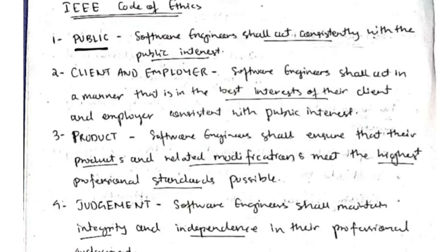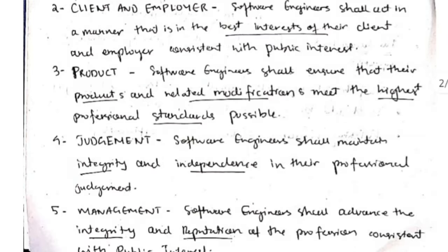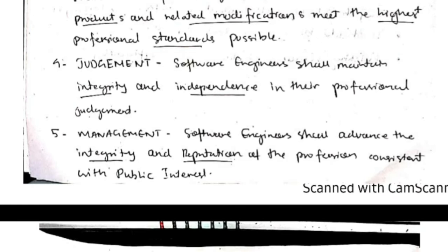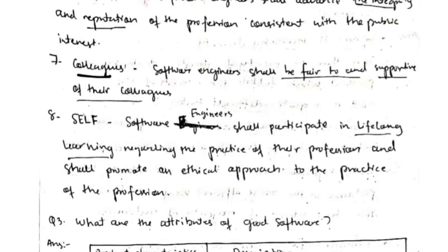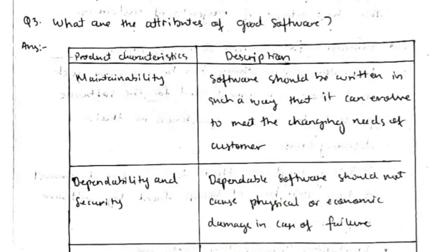For eight marks, include the IEEE code of ethics. First, public — whatever product you develop should be useful to the public. Second, there should be no conflicts between the client and employer. Third, the product should be the best possible within your capability. Fourth, judgment — be fair with the customer. Fifth, management — manage customer needs and organize your product. Sixth, profession — give your best in whatever field you work. Seventh, colleagues — be fair and supportive. Eighth, self — participate in lifelong learning of software engineering techniques and promote an ethical approach.